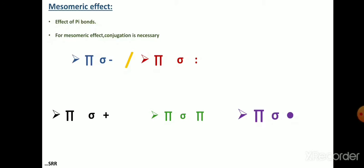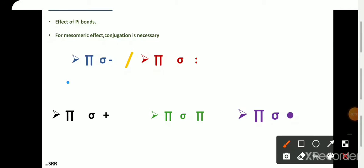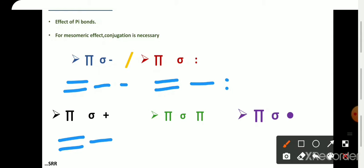For any molecule to show mesomeric effect, it must have conjugation. The different conjugation conditions are: pi-sigma-negative charges, pi-sigma-lone pair of electrons, pi-sigma-positive charges, pi-sigma-pi, and pi-sigma-free radical. For any molecule to have mesomeric effect, it must satisfy one of these conjugation conditions. We will see mesomeric effect regarding all these conjugation conditions with examples in upcoming slides.